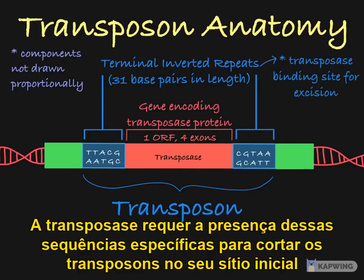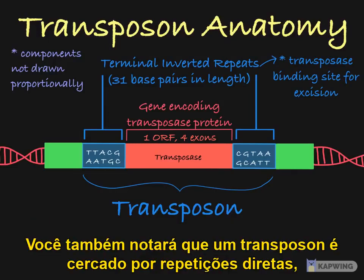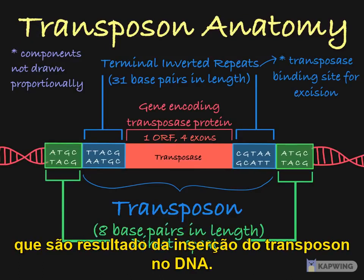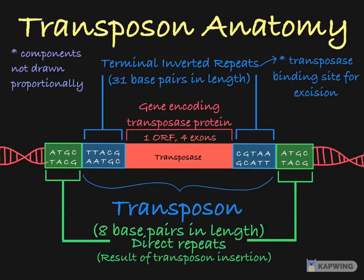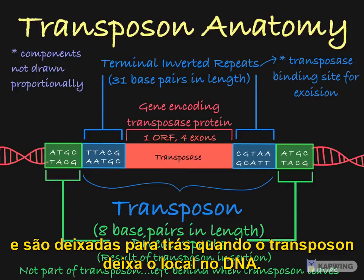This inverted repeat serves as the transposase binding site. Transposase requires the presence of these specific sequences to cleanly cut the transposon out of its initial host site. You will also notice that a transposon is flanked by direct repeats, which are a result of the insertion of the transposon into the DNA. These direct repeats are not part of the transposon, and they are left behind when the transposon leaves this site of the DNA.